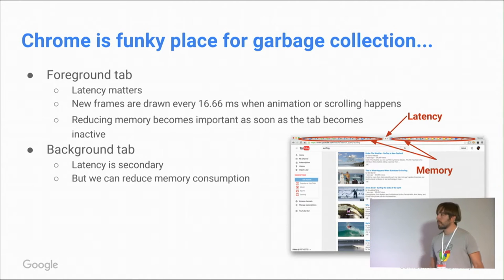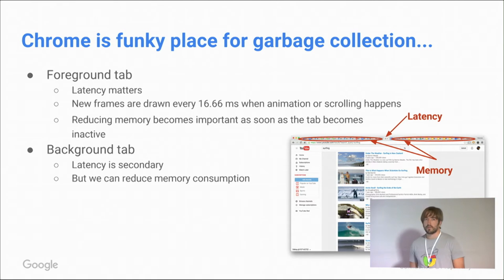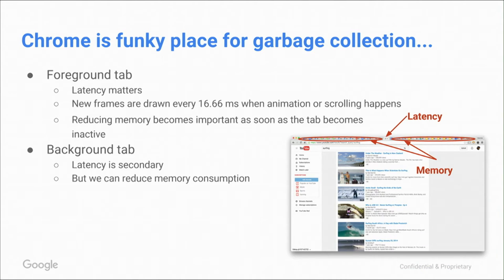Let's take a step back and look at Chrome. In a typical window I have a ton of tabs open. There's one tab I really care about — the foreground tab — and this is the only tab where latency matters. Here I really want 60Hz frame rendering when animation callbacks happen. But if nothing is going on there, that's the time when I want to get rid of memory and shrink down the heap. Then there are the many background tabs which I probably opened days ago and never look at — these should really shrink and not use a lot of memory.